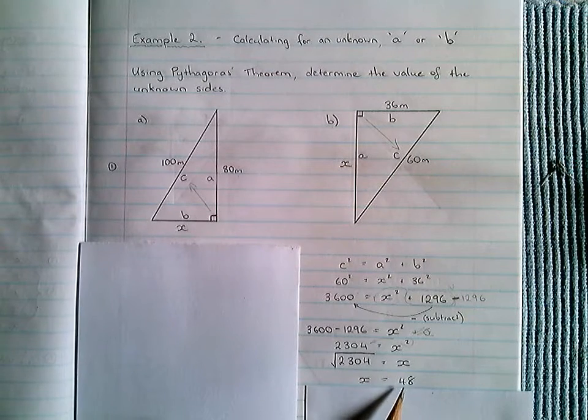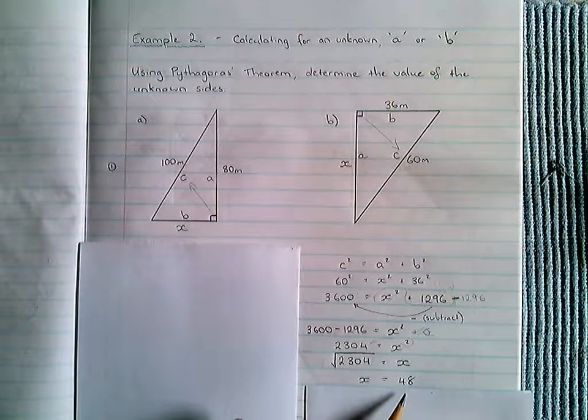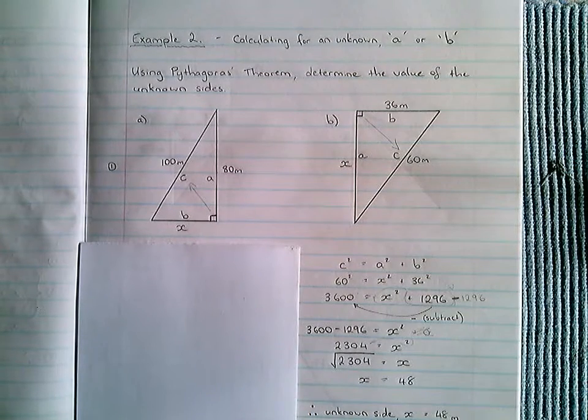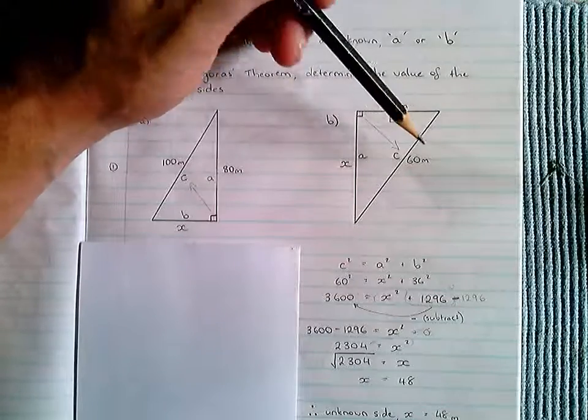And as a final step, I'm going to explicitly state that value and the units. Therefore, the unknown side, X, is equal to 48 metres. Once again, I get those units from the question.